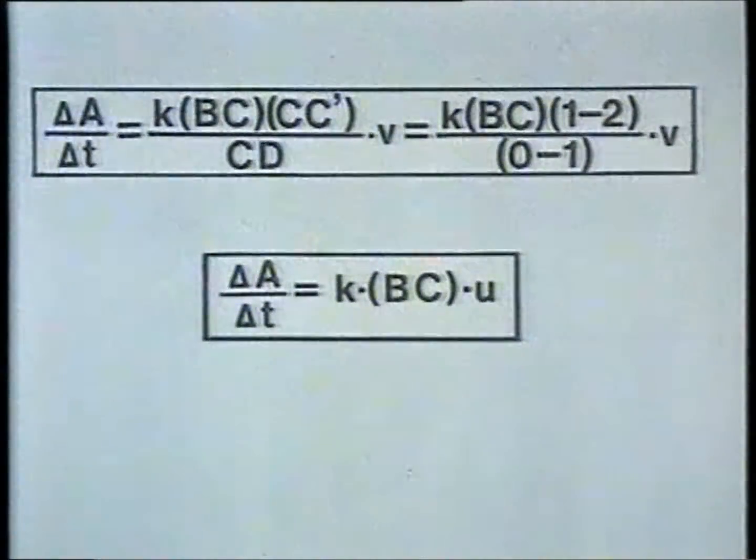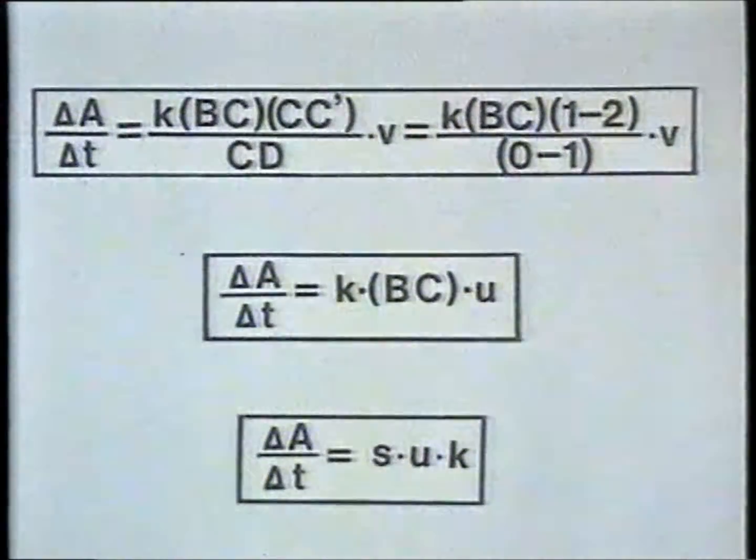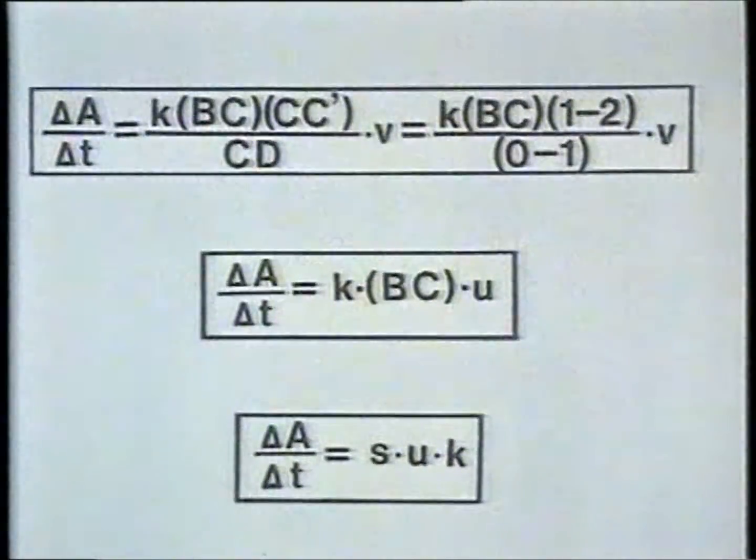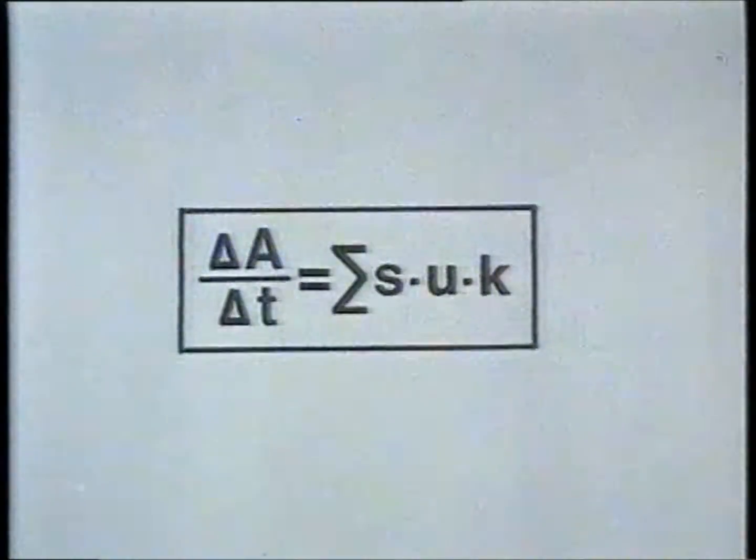bc is equal to the length of the line of discontinuity which we denote s. The rate of work per unit width can then be written as s, u, k. If there are several discontinuities in the guest deformation pattern we get the work by simple summation. The result is fundamental to the plane strain upper bound method.